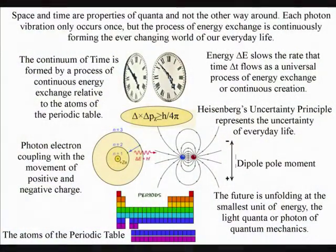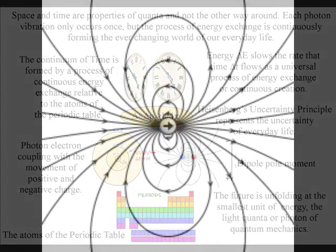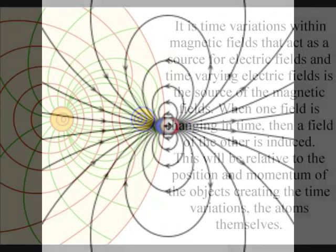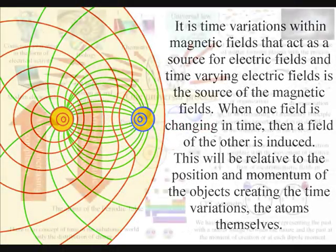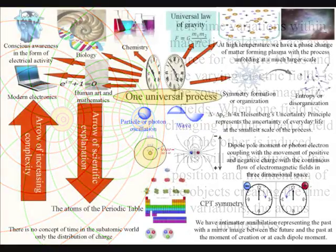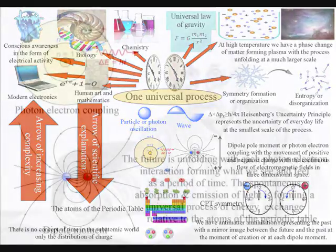Each photon oscillation or vibration only occurs once, forming the movement of positive and negative charge, with the continuous flow of electromagnetic fields in three-dimensional space. We see this universal process as light, feel it as heat, hear it as sound, and measure it as a period of time, relative to the atoms of the periodic table.